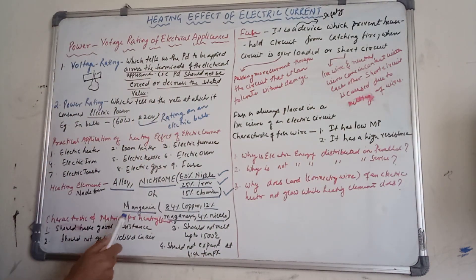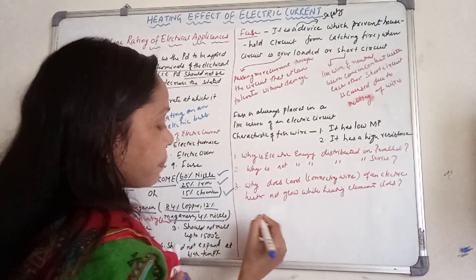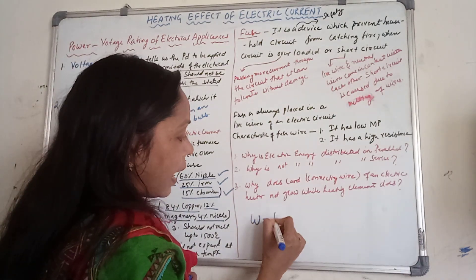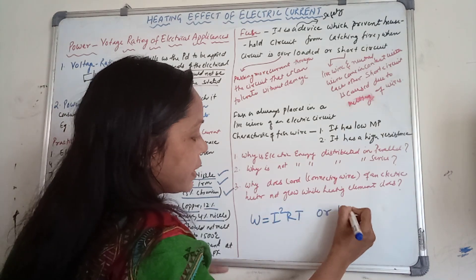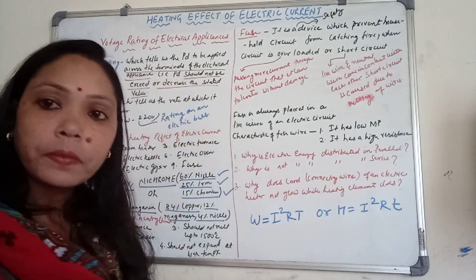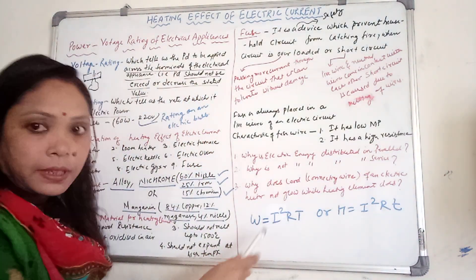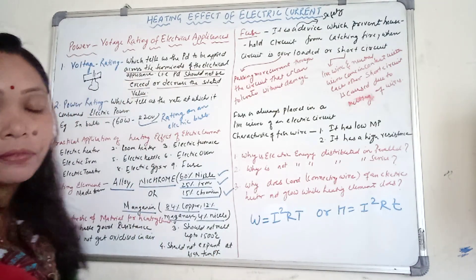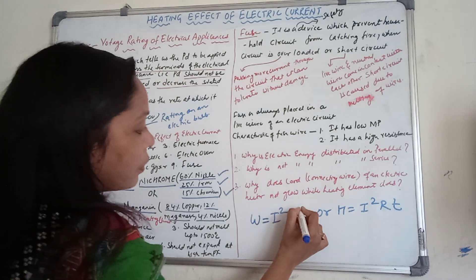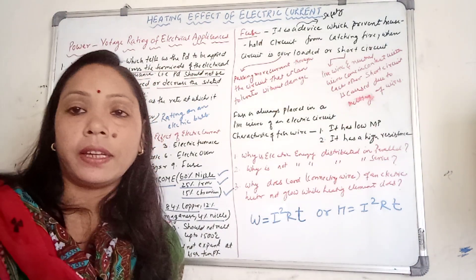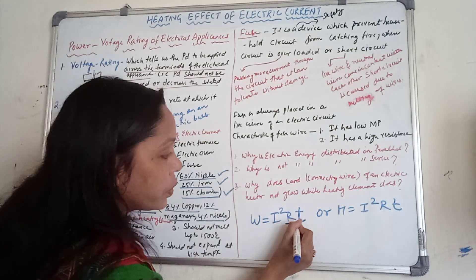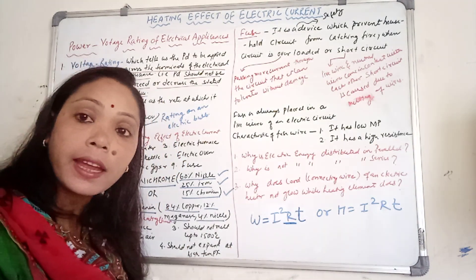Now, characteristics of material for heating element. We know that the expression of electric energy or heat is given by H = I²RT. If the current is more, the heating effect is more. If resistance is more, the heating effect is more. If the time of flowing current is more, the heating effect is also more. First characteristic: the heating element should have high resistance.